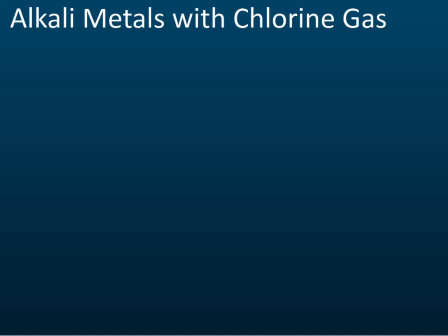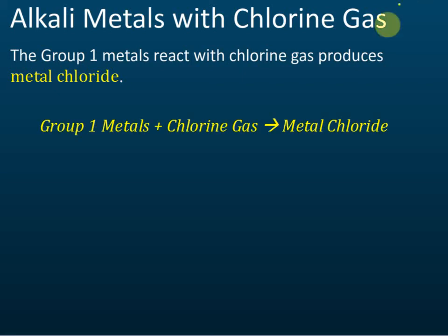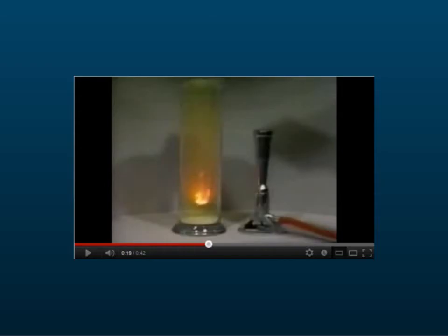The last reaction is chlorine gas. When group one metals react with chlorine gas, they produce metal chloride. So group one metals react with chlorine gas produces metal chloride — you need to memorize or remember this.